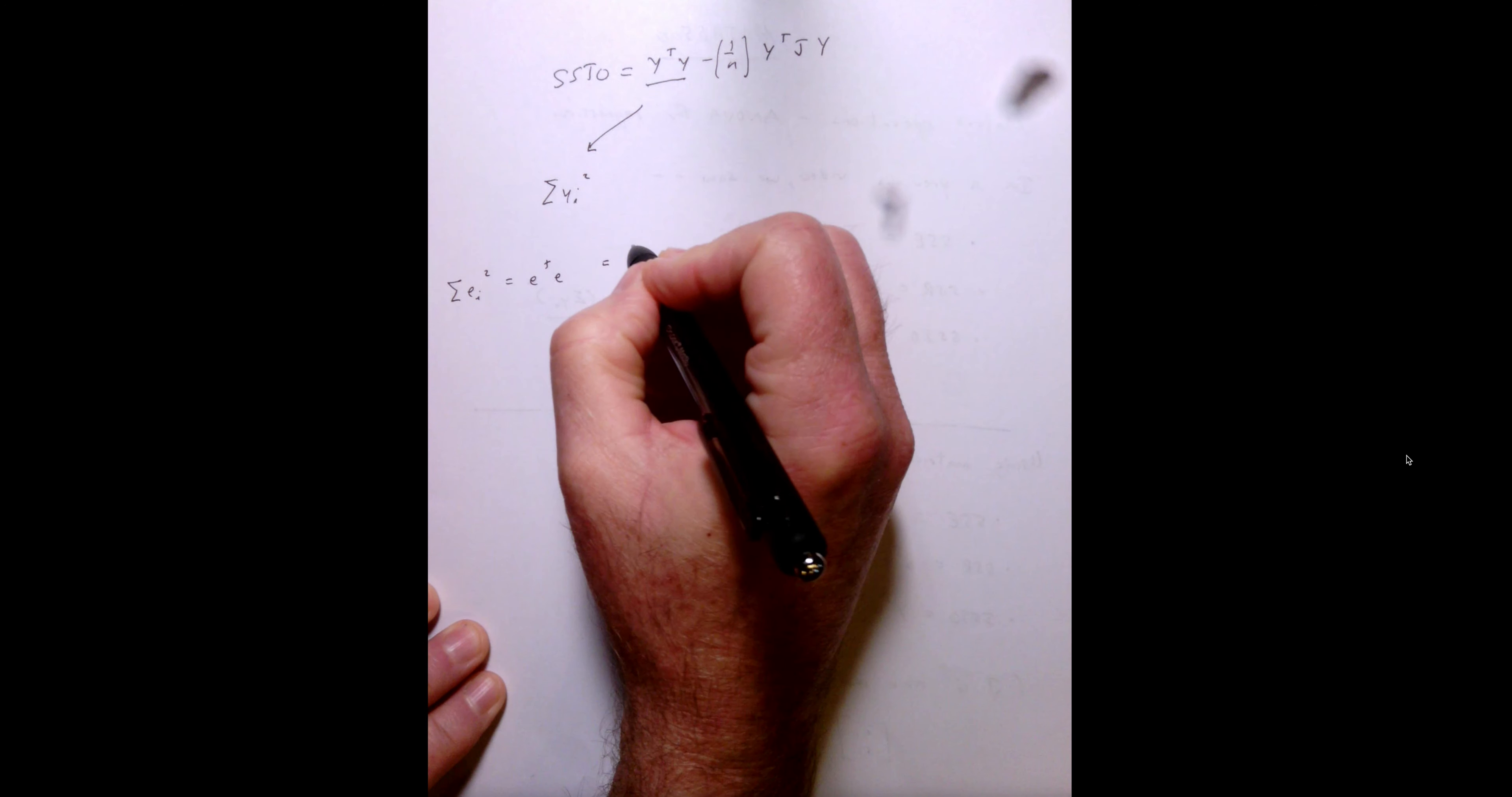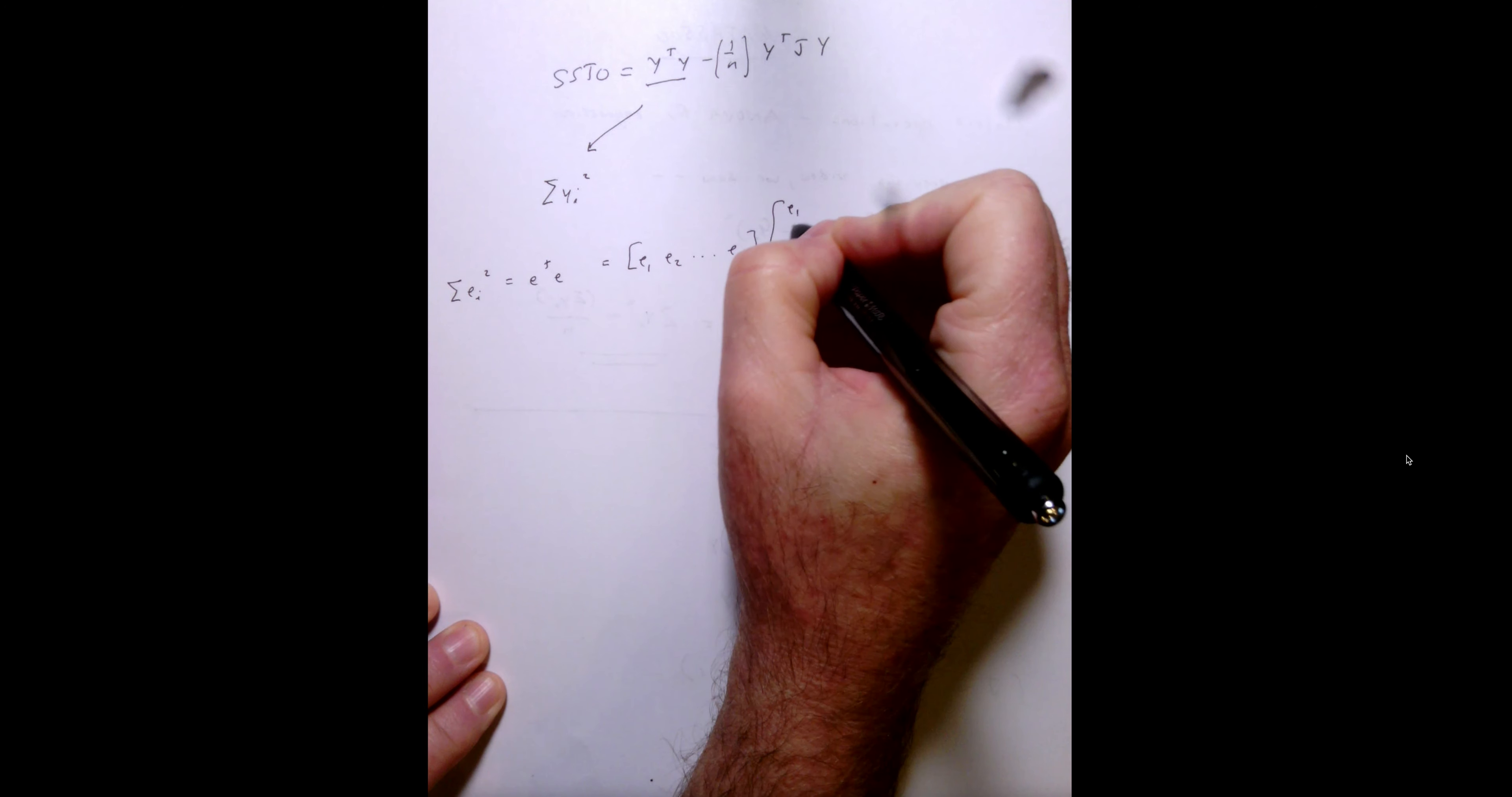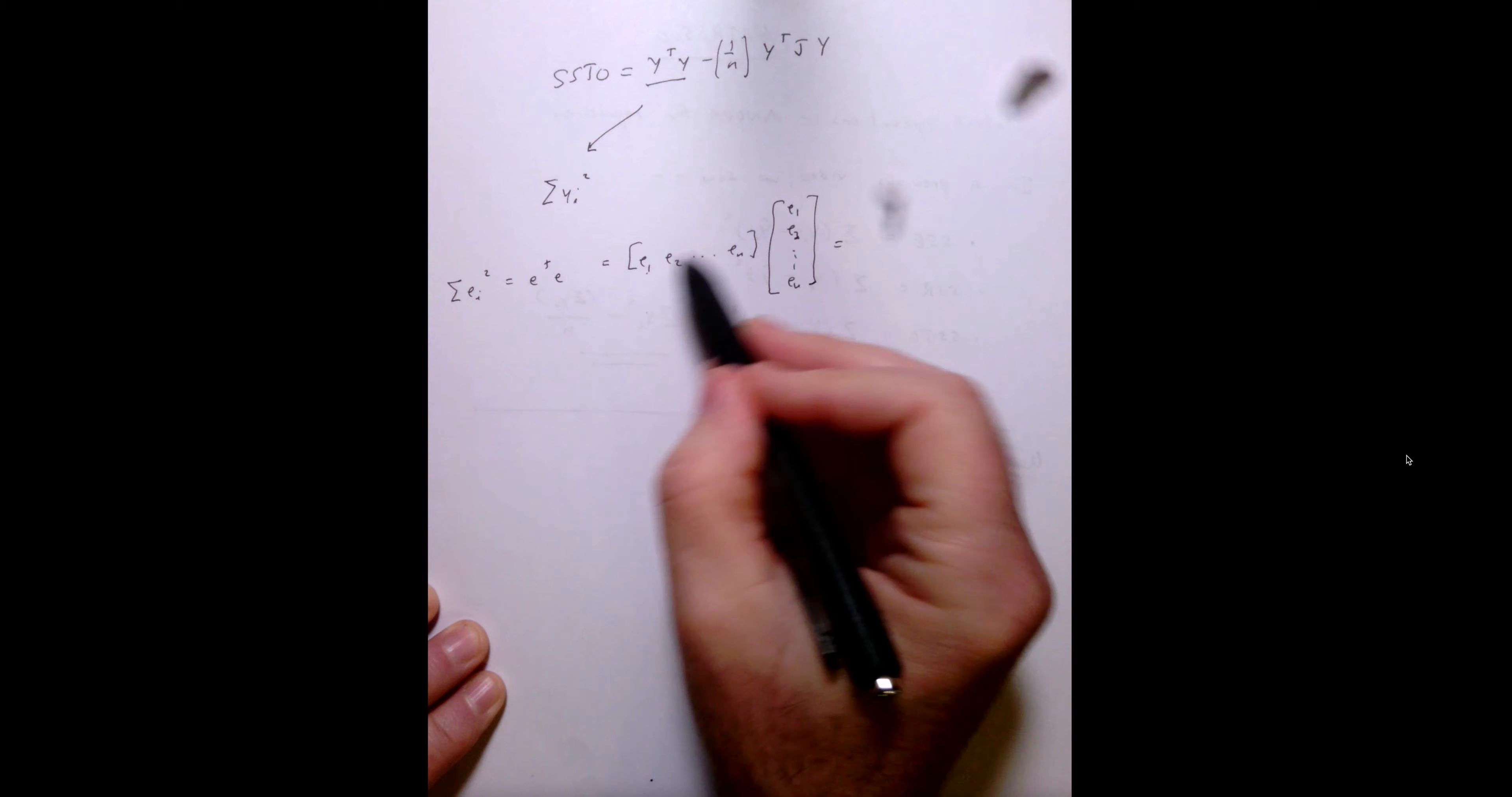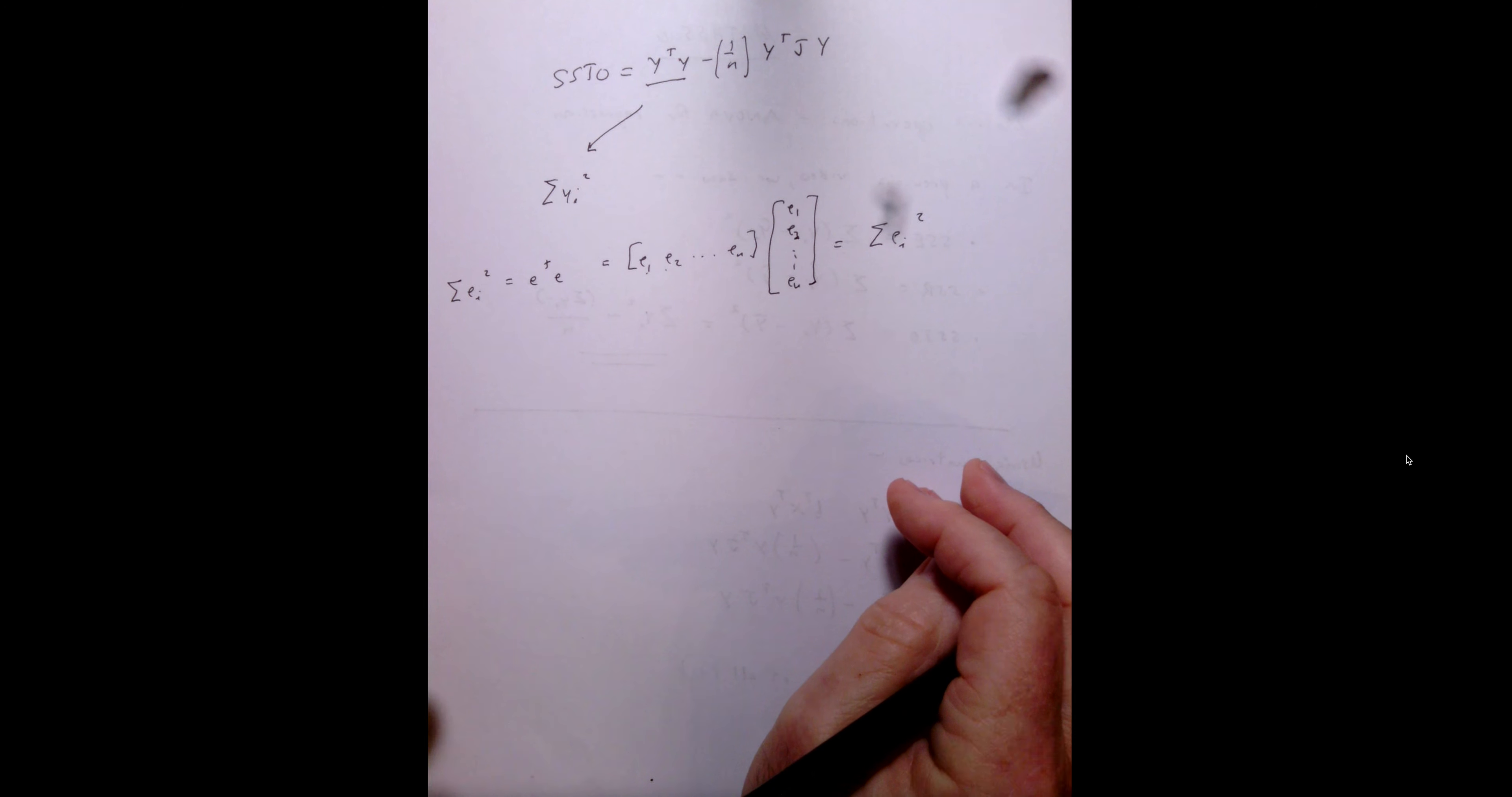The reason being, I don't want to be redundant, but if you already got this, you can fast forward. So, when we take a linear combination, e1 times e1 plus e2 times e2, we get precisely what we want, the sum of the errors squared.